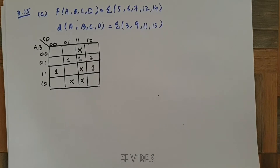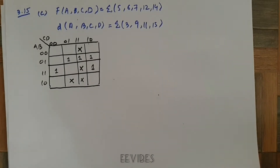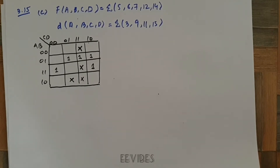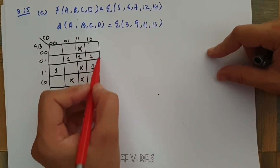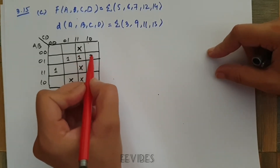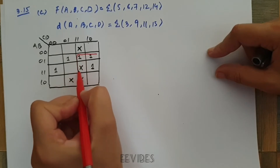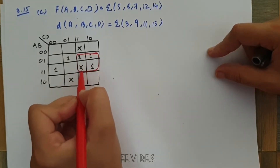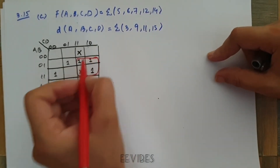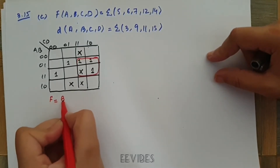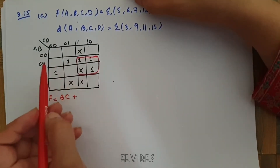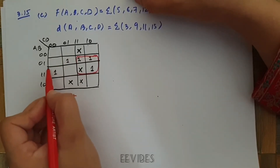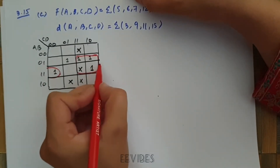The goal of the don't care conditions is to help simplify the function. We will try to merge them with consecutive squares to maximally reduce the function expression. Here I want to combine four adjacent squares, so I include this don't care condition, and the expression I get is F = BC.